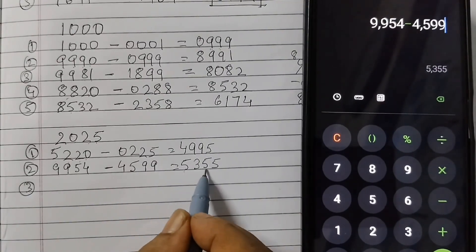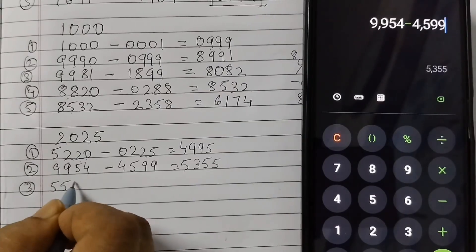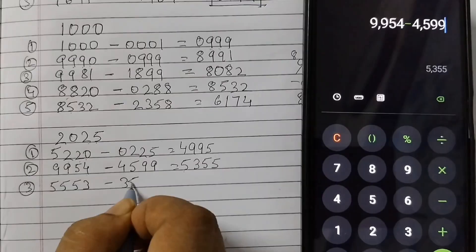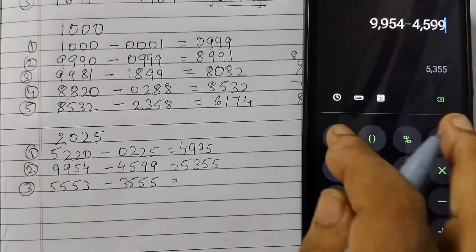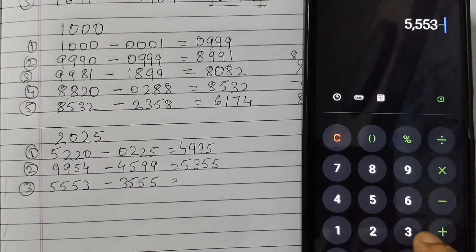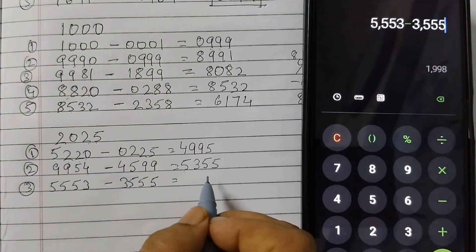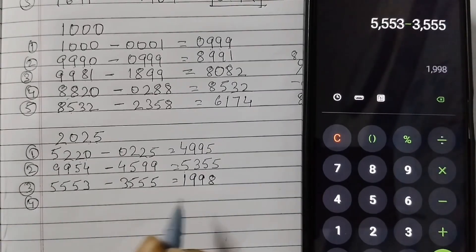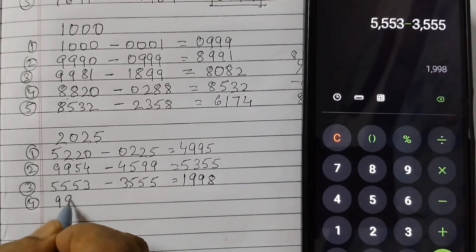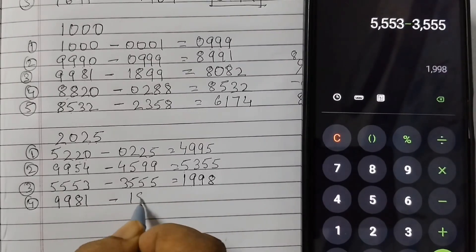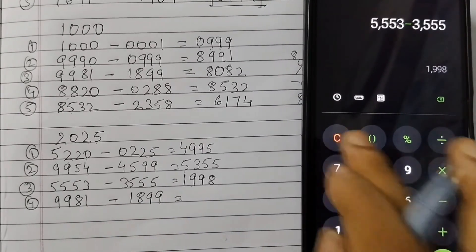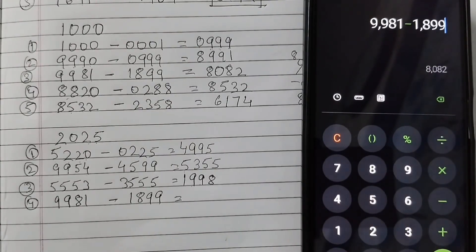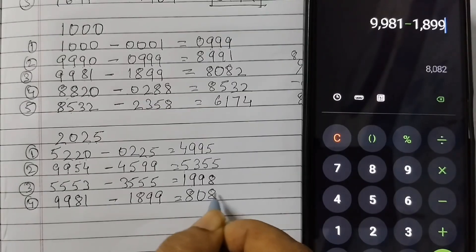Third step: 5553 would be the largest number, smallest number in the reverse order, so 3555. 5553 minus 3555, we get 1998. Fourth step: 9981 largest number, smallest number would be 1899. We do the subtraction, 9981 minus 1899, that is 8082.